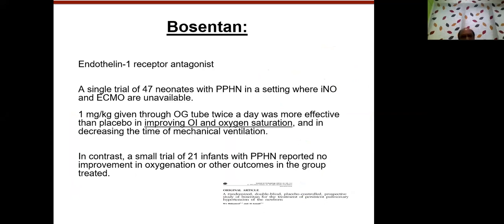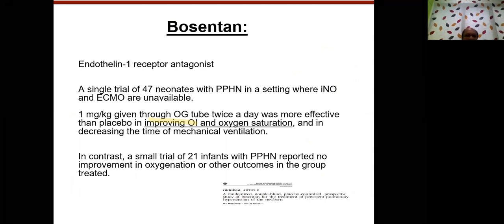Bosentan is an endothelin-1 receptor antagonist used in infants and children. A single trial of 47 units with PPHN in a setting without nitric oxide or ECMO showed significant improvement in OI and oxygen saturation. A smaller trial of 21 infants showed less difference. Prostacyclins and other medications like epoprostenol and treprostinil are not commonly available in India — they are given orally, intravenously, or subcutaneously.